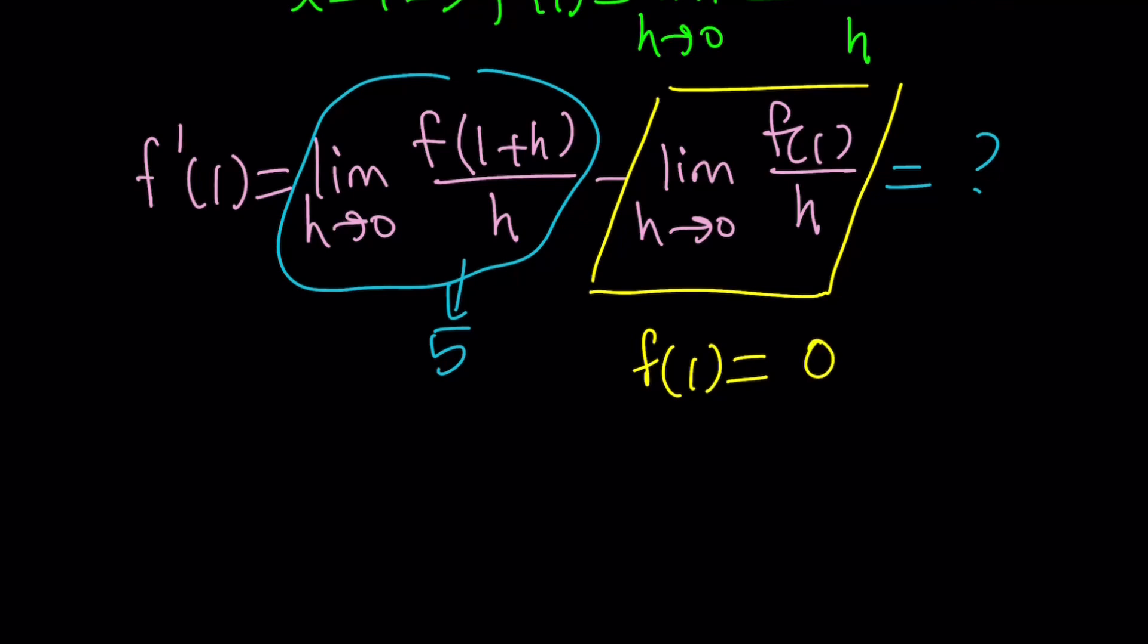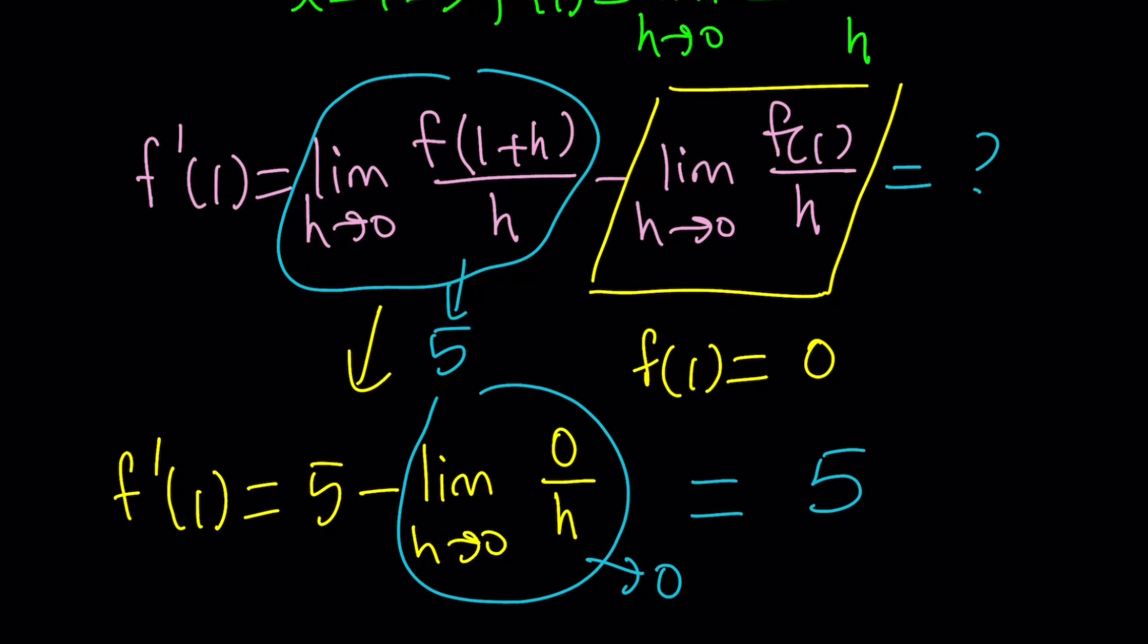So how does that help? Well, once we know f of 1 is 0, we can evaluate f prime at 1, because it's just going to equal 5 minus limit as h approaches 0 of 0 over h. And obviously, since h approaches 0 but h does not equal 0, we're going to get 0 divided by a very, very small number, something that's super close to 0, and this is going to be 0. So f prime at 1 is going to equal 5.